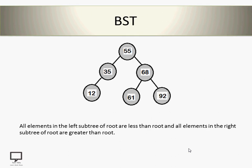Before going to optimal binary search tree, let's start with a binary search tree. BST stands for binary search tree. This is a binary tree following a specific property: all elements in the left subtree of a root node are less than the root node, and all elements in the right subtree are greater than the root node. Let's consider root node 55 — elements 35 and 12 are less than 55, and elements 68, 61, and 92 are greater than 55.